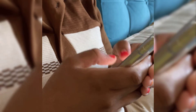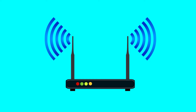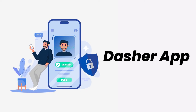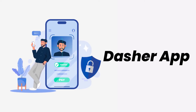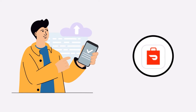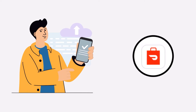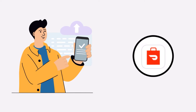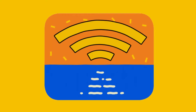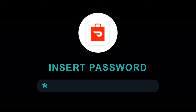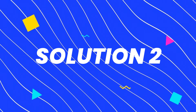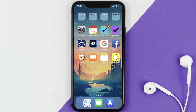It might be possible that you're not able to log in due to a connectivity issue, so first make sure you have a strong and stable internet connection. Do a quick test by opening an app that runs on the internet other than the Dasher mobile app and check if it's working. You can also try switching from Wi-Fi to mobile data and vice versa — doing this might help you log in.